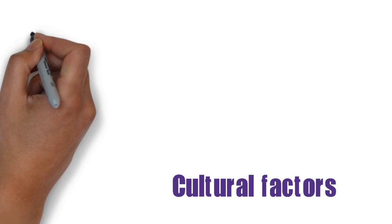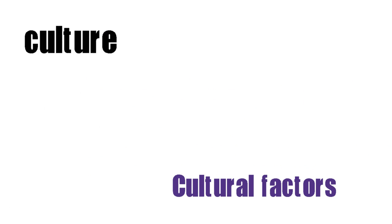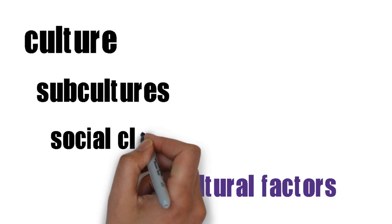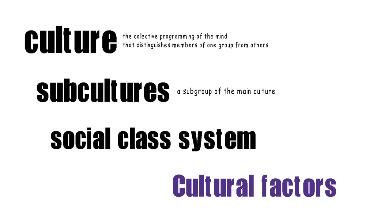Under the cultural factors category we can include culture, subcultures, and the social class system. Hofstede defines culture as the collective programming of the mind that distinguishes the members of one group or category of people from others. Culture is a set of beliefs, values and practices that are shared by most people within a relatively large group. It is passed on from one generation to the next and is learned, and can change through time, although such changes tend to be slow.